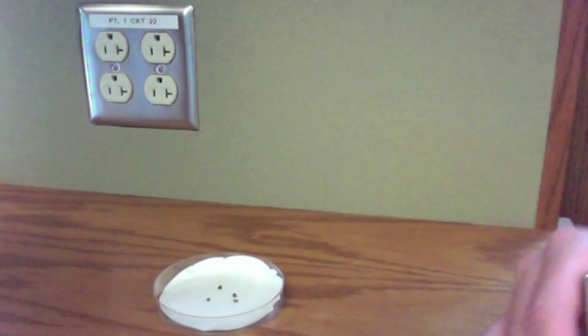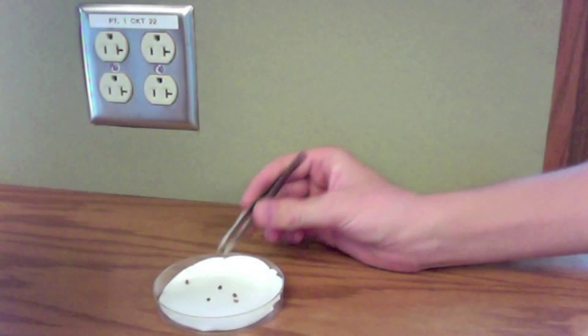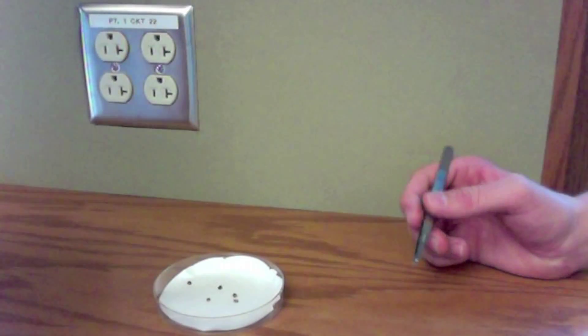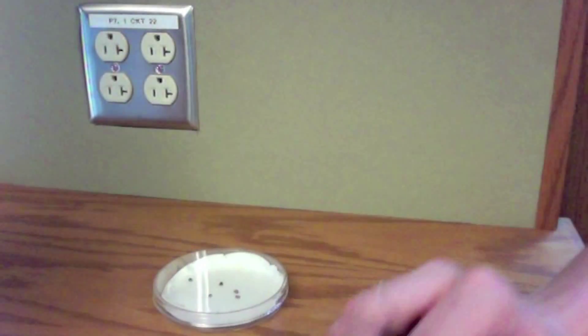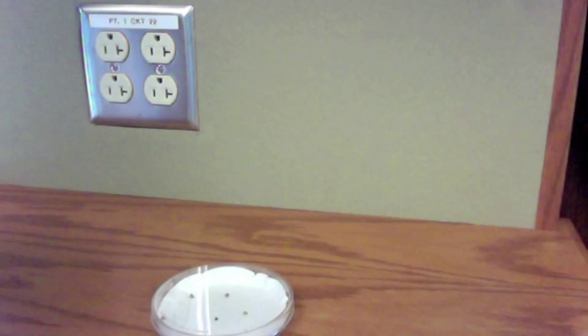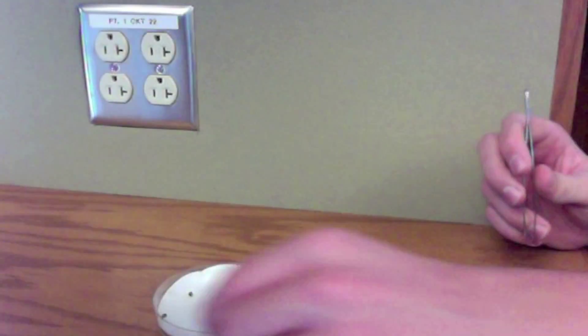For 3 of the petri dishes, we did not cover with filter paper. We left it open. The other 3, our more saturation petri dishes, we put filter paper over the top of the seeds.